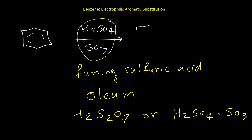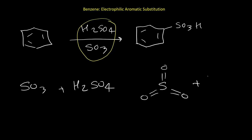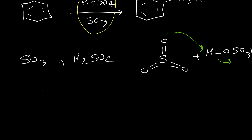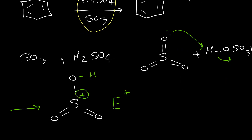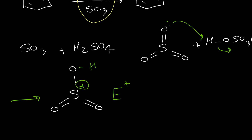The product of the sulfonation reaction is benzene sulfonic acid. In the mechanism, SO3 reacts with sulfuric acid to produce an intermediate cation that acts as the electrophile and reacts with benzene. The rest of the mechanism is similar to the other EAS examples.